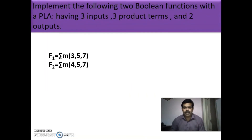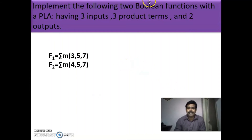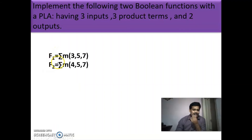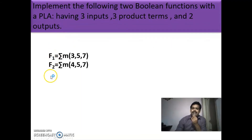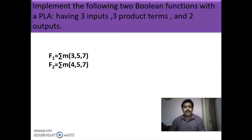Implement the following two Boolean functions with a PLA having three inputs, three product terms and two outputs. We are given two Boolean functions F1 and F2 to implement using three inputs. Since only the functions are given and not the variables, take the variables as A, B, and C. F1 and F2 are the two outputs. In PLA, the first step is to minimize the expression using K-map.